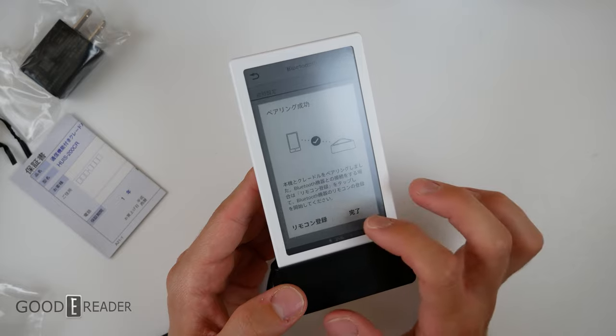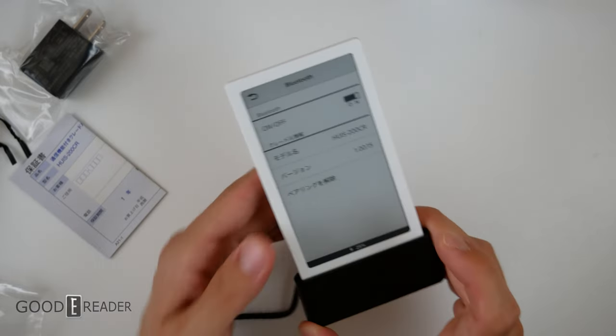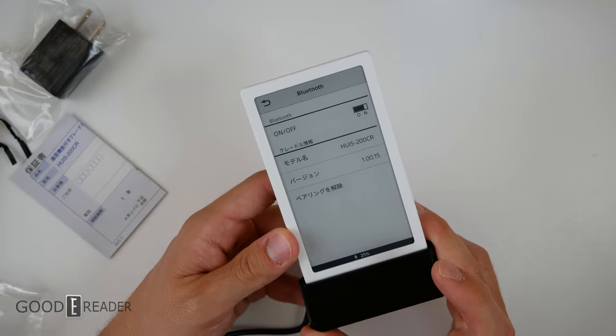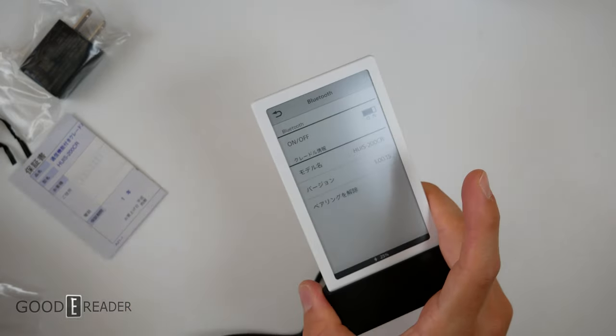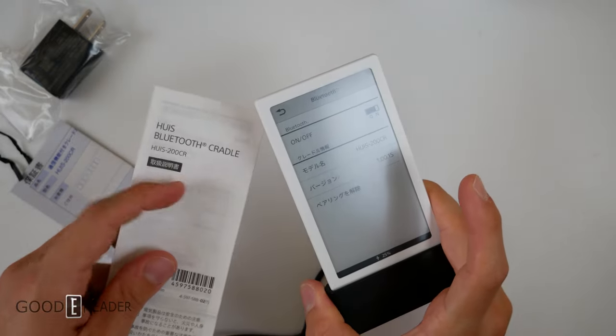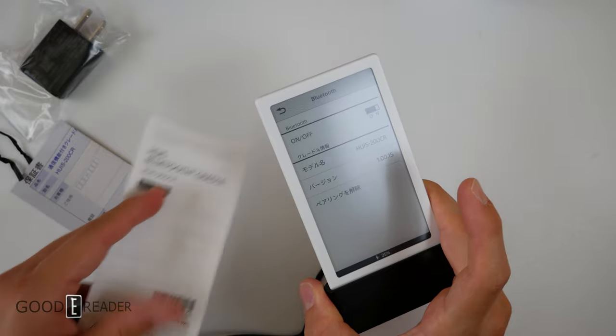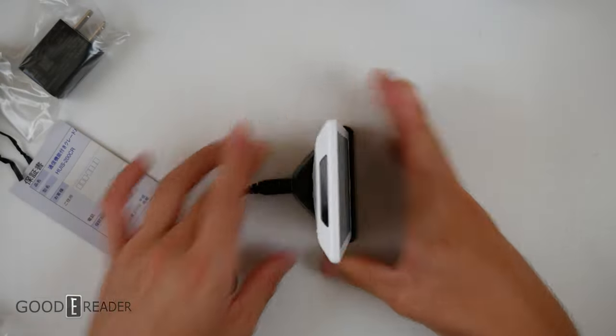You can use it as a remote control now. You can see you have some Bluetooth options. You can tell that the HUIS 200CR is the same as the model number on the packaging and this unit. So now we know it is connected.